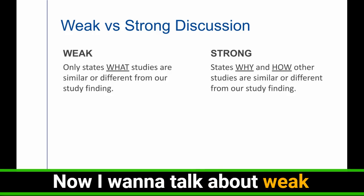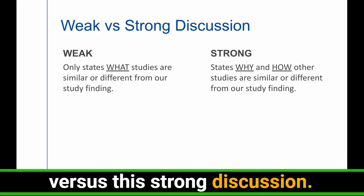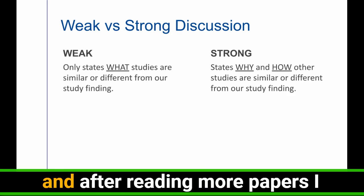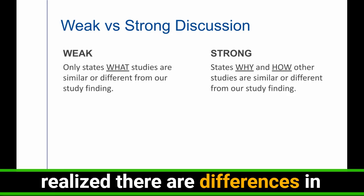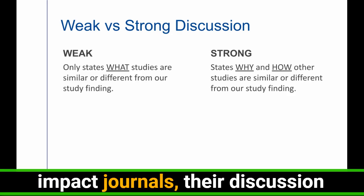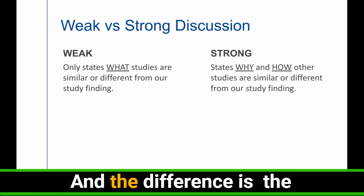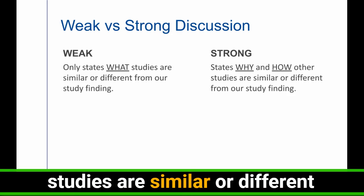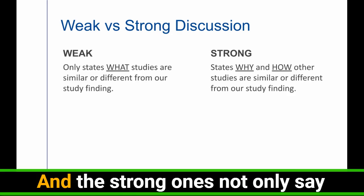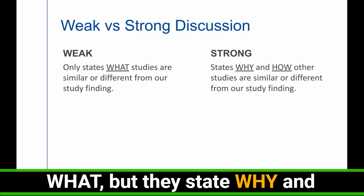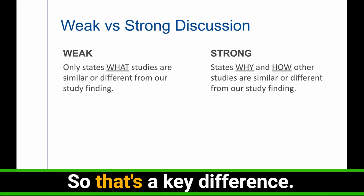Now I want to talk about weak versus strong discussion. So my first few papers, I have been using a lot of weak discussion. And after reading more papers, I realized there are differences in higher impact papers in higher impact journals. There are discussions sections that are much, much stronger. And the difference is the weak one only states what studies are similar or different from our study finding. And the strong ones not only say what, but they state why and how other studies are similar or different from our study finding. So that's a key difference.